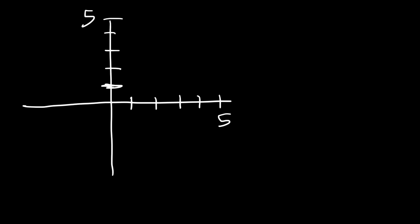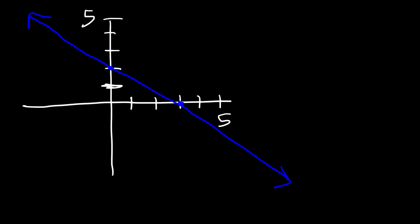Now let's look at another example. I'm going to draw another graph and from it determine the x and the y-intercepts. Let's start with the x-intercept. Notice that we have an x-value of 3 — that's where the curve intercepts the x-axis. So we have the point (3, 0). That's the x-intercept.